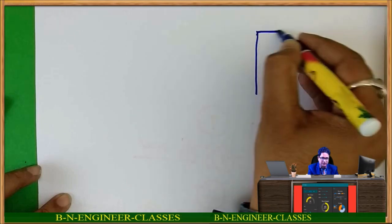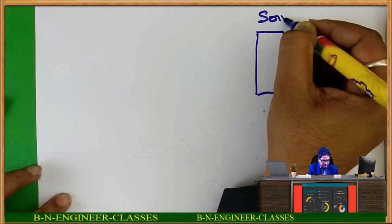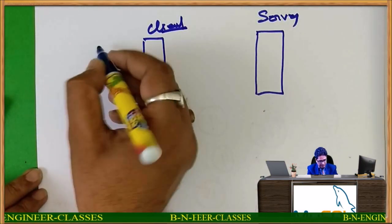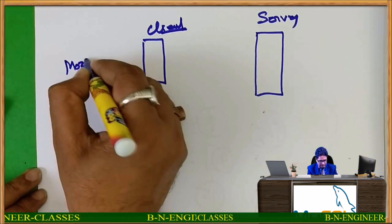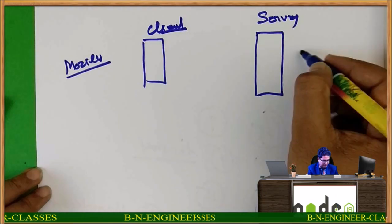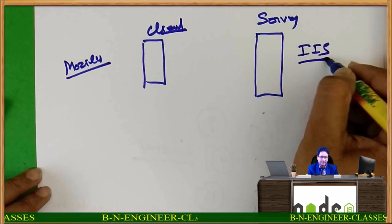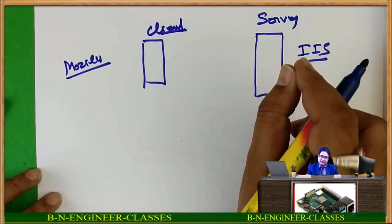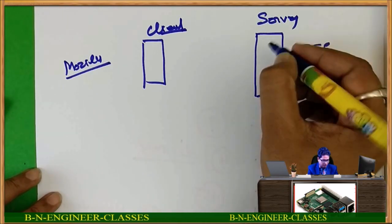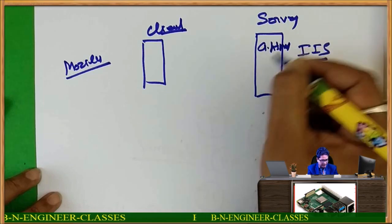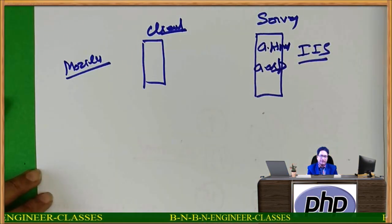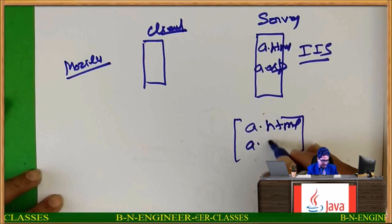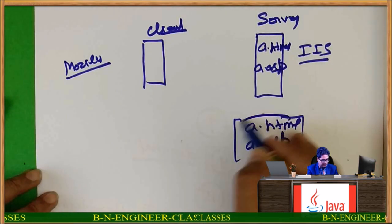As I showed in the diagram: this is my server, this is my client. The client may be a web browser like Mozilla, and the web server I am considering is IIS. Now, I am taking one example of a client-side script and one of a server-side script. I am saying a.html and a.asp — both are available on the server.